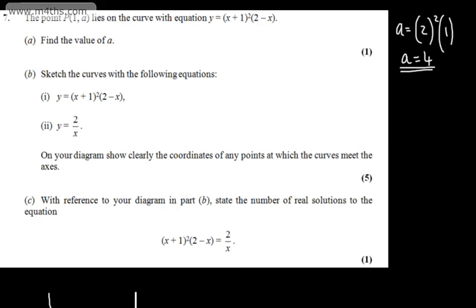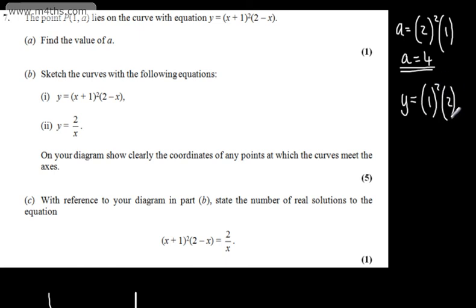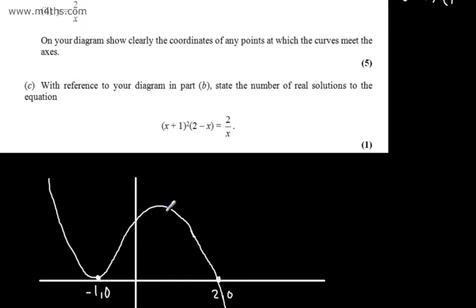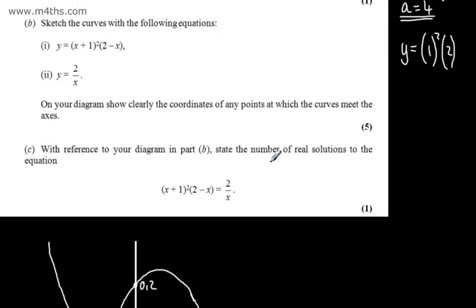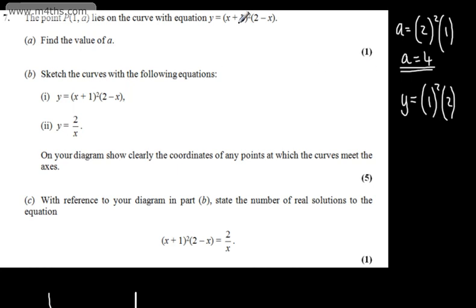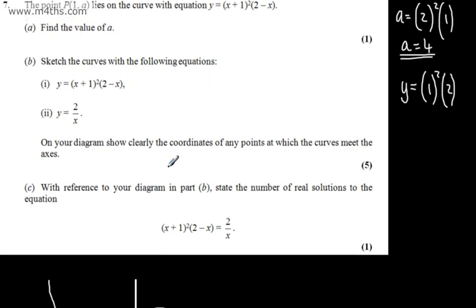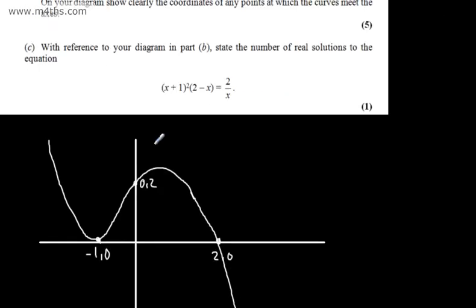Now considering the y-intercept, that is when x is equal to 0. When x equals 0, we have 1 squared multiplied by 2, so this point becomes 0 comma 2. All we've done is substituted x equals 0 to find that value.